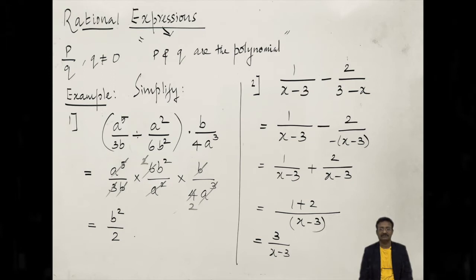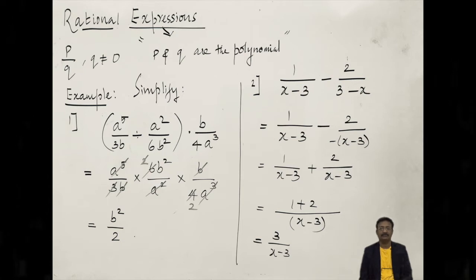Now all three rational expressions are under multiplication, so we can easily simplify by cancelling common terms. Numerator a to the power of 5; denominator we see a squared times a cubed, which becomes a to the power of 5 — cancel a⁵ with a⁵. Now for b terms: denominator has one b, cancel with numerator b from the third rational form. For numbers: cancel 3 from denominator with 6 in numerator to get 2, then cancel 2 with the 4 in the third denominator to get 2. Remaining: b squared divided by 2. The solution is b²/2.